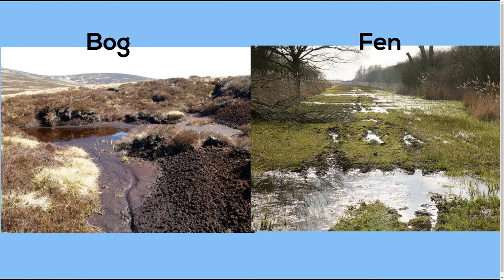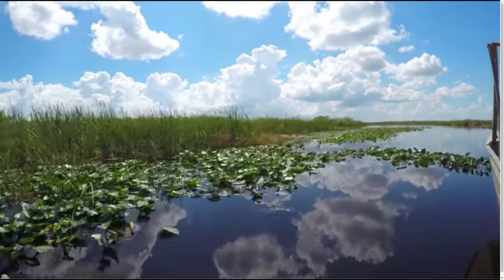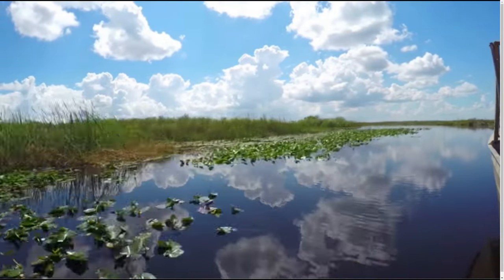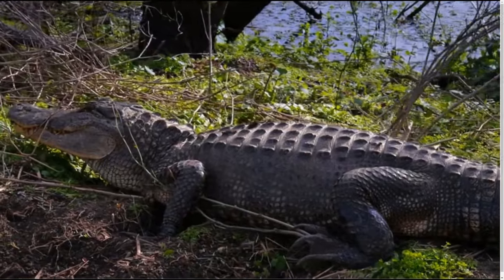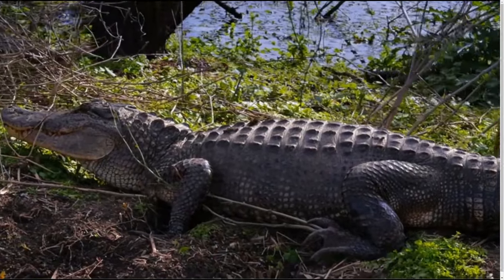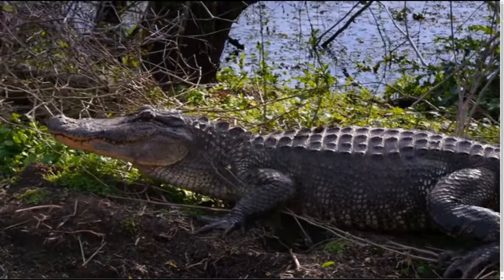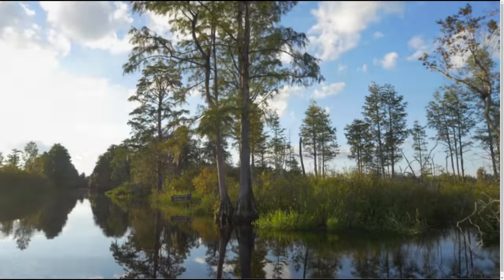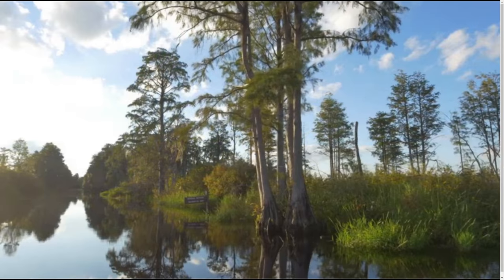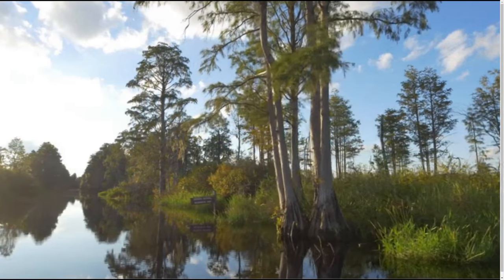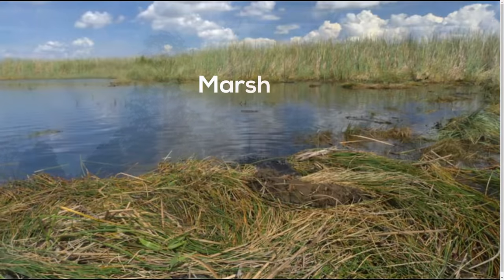Each of these areas are wetlands. Wetlands are areas that are saturated with water. The amount of water present in a wetland can vary greatly. Some wetlands are always flooded, while others are only seasonally flooded, but remain saturated with water during the unflooded period.